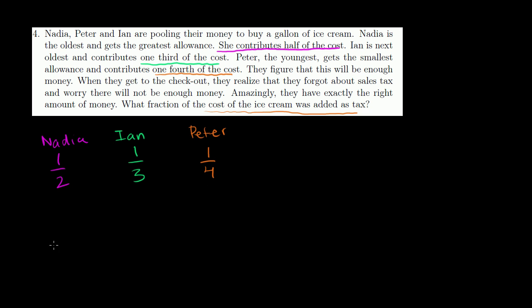So 1/2 is the same thing as 6/12, right? 2 times 6 is 12, 1 times 6 is 6. These are equivalent. 6 is half of 12. 1/3, if we use 12 as a common denominator, to go from 3 to 12, you have to multiply by 4. So you take that 4 and you multiply it by 1. 4/12 is the same thing as 1/3. And then 1/4, if you use your denominator 12, to go from 4 to 12, you have to multiply it by 3. So multiply the numerator by 3 as well, you get 3.